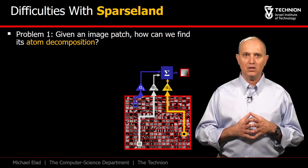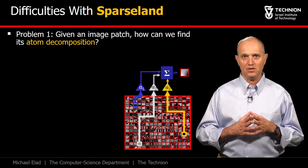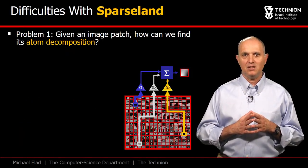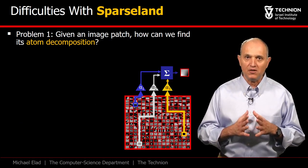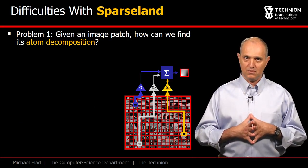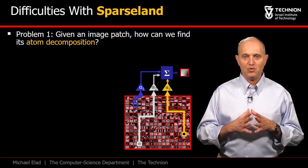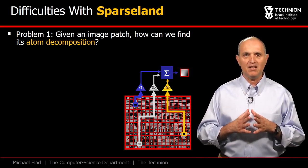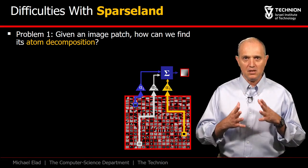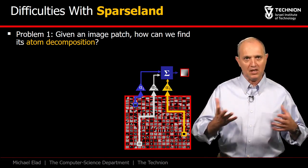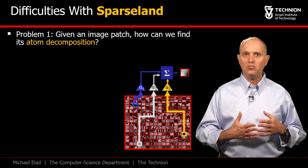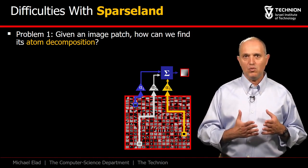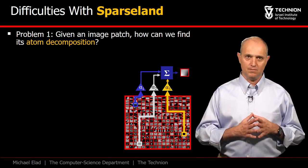The Sparsland model may seem simple and easy to use, but in fact it is accompanied by several major challenges that might seem unbreakable at first. We start with the most elementary problem: given a signal, we aim to find its sparse representation, basically seeking the small set of atoms explaining it. We refer to this task as atom decomposition, and the question we pose is how should this be done?